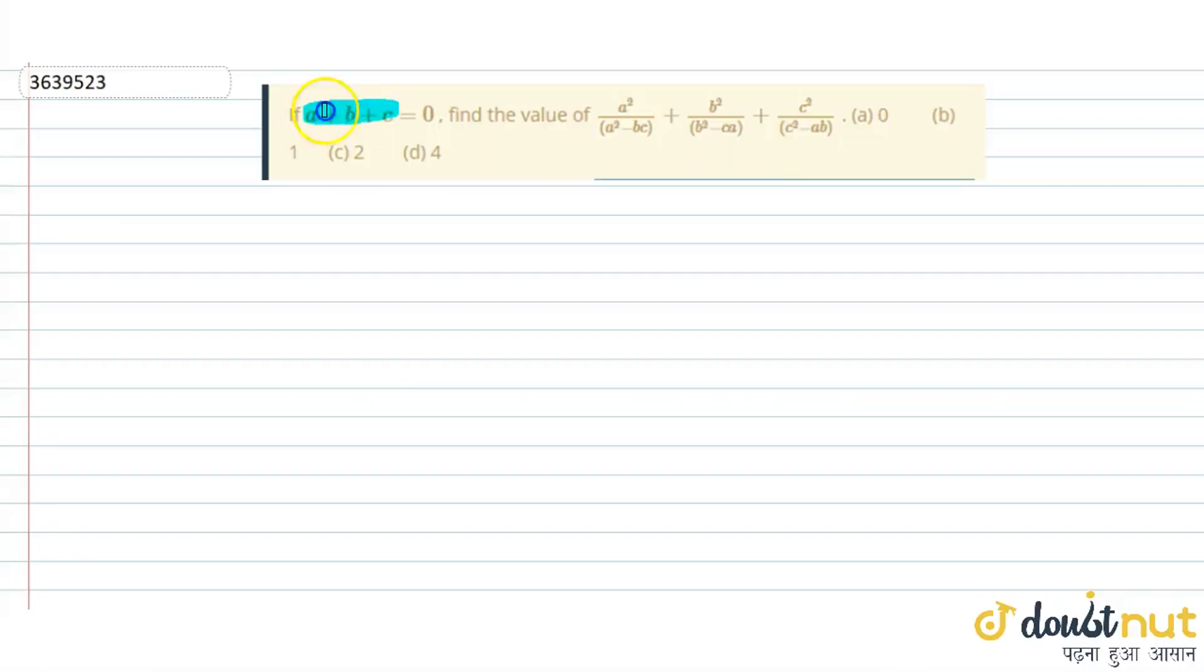The question given is, if a plus b plus c is equal to 0, then we have to find the value of the given expression.